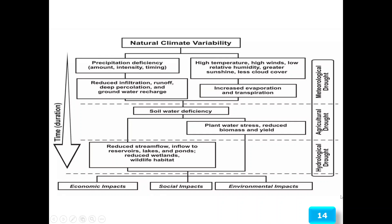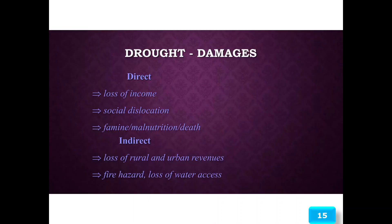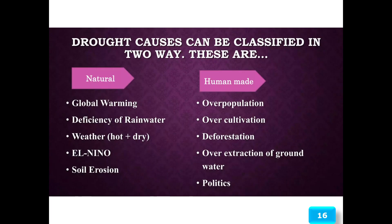This flow chart clearly shows how natural climate variability affects one place relative to another. Drought damages include direct loss of income, social dislocation, famine, malnutrition, death, indirect loss of rural and urban revenues, fire hazard, and loss of water access. Drought causes can be classified in two ways: natural and human-made.